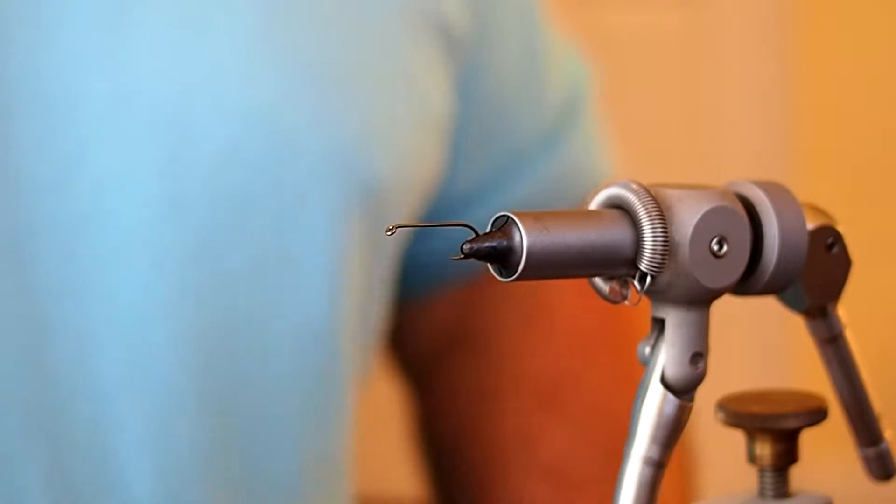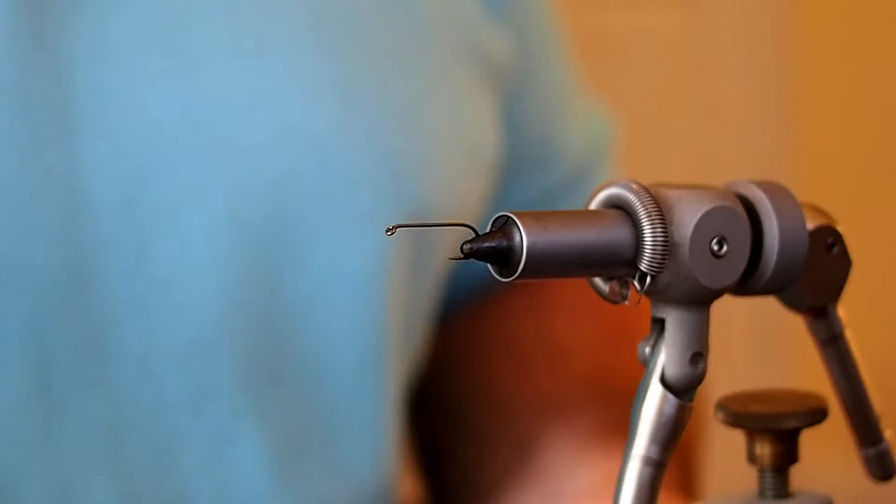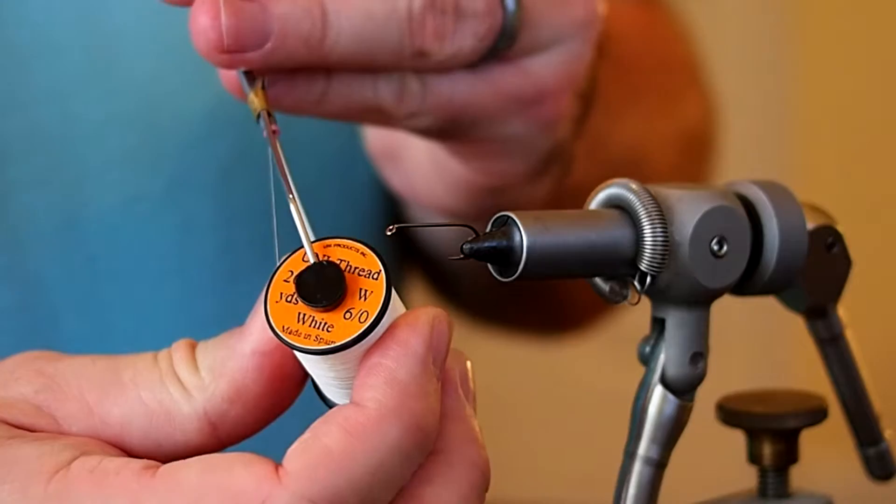Alright, in this video I'm going to be tying the Shad Queen. In the vise I have a size 8 Daiki 1710 hook. That's a 2x long hook. I'm going to be tying the fly with 6-Ot unithread in white.